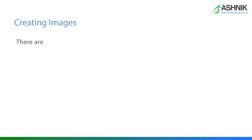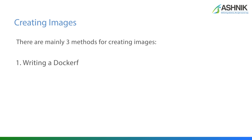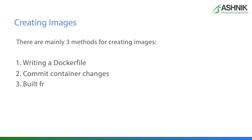There are three ways to create Docker images. First is by writing a Dockerfile, which is the most used and recommended way. Second is by committing content changes from an existing running container. And third is building from scratch.